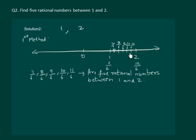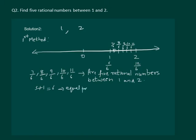Divide the portion into six parts: first, second, third, fourth, fifth, and sixth. Basically, just remember that if you have to find five rational numbers, then you divide into five plus one — that is, six equal parts. For example, if we had to find nine rational numbers between 1 and 2, then we would divide 1 and 2 into nine plus one, that is, ten equal parts.